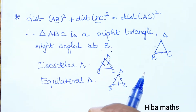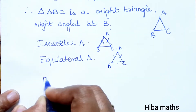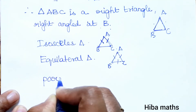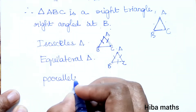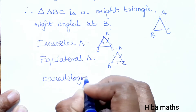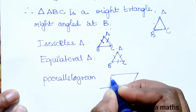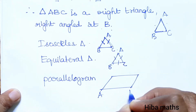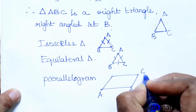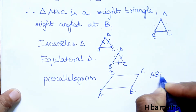Next question involves 4 points and a parallelogram — whether the given points form a parallelogram or not. The parallelogram property is that opposite sides are equal: AB equals CD and BC equals AD.